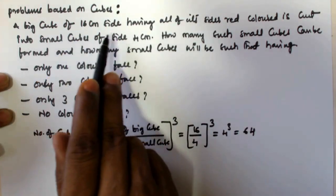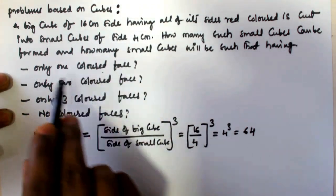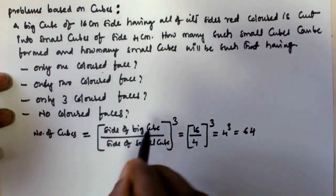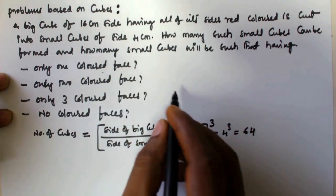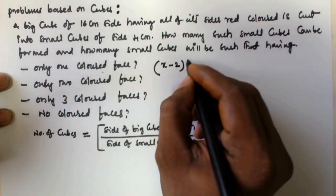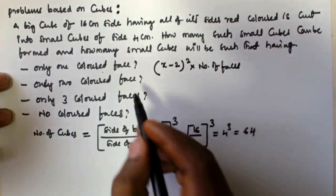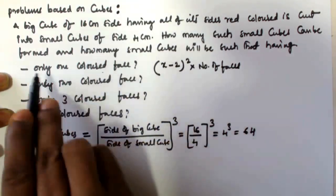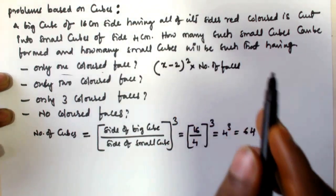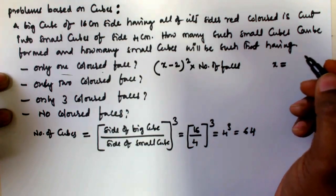Now we have to find the number of cubes with only one colored face. The formula for only one colored face cubes is equal to (x minus 2) squared, multiplied by the number of faces.